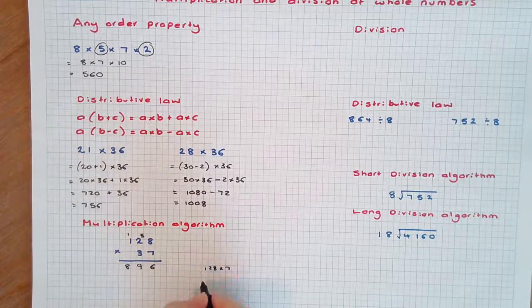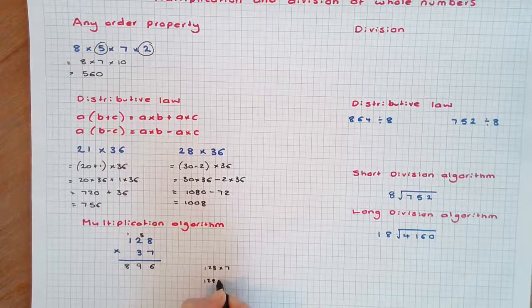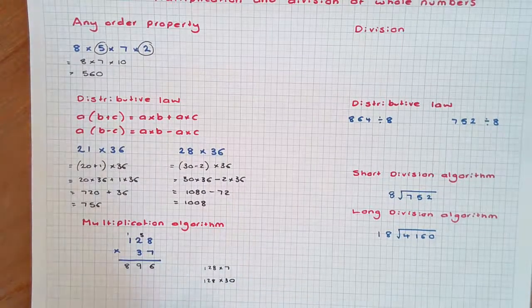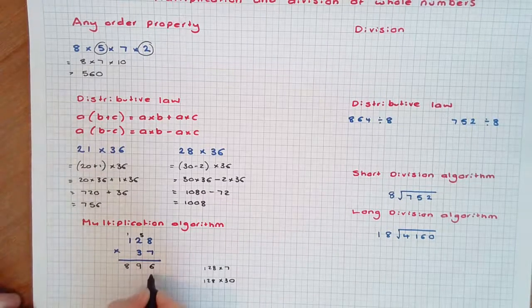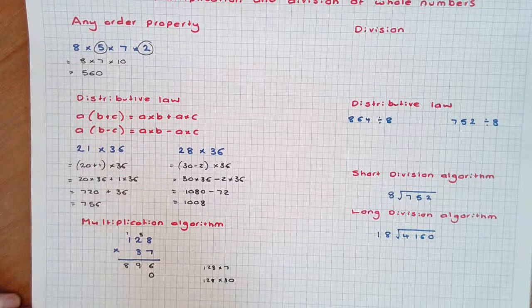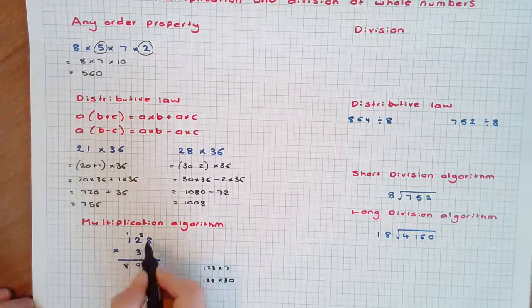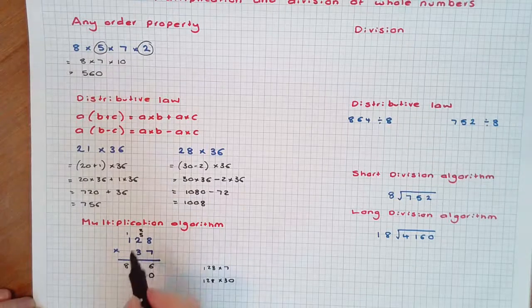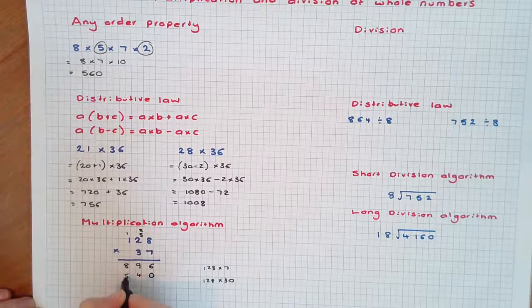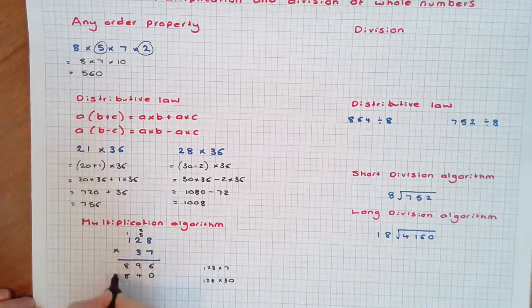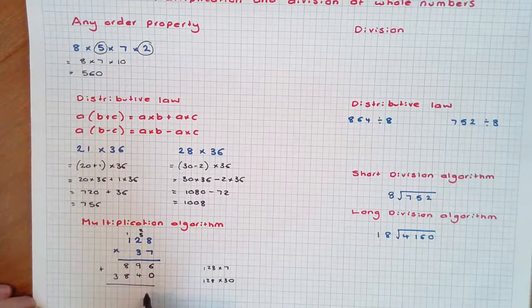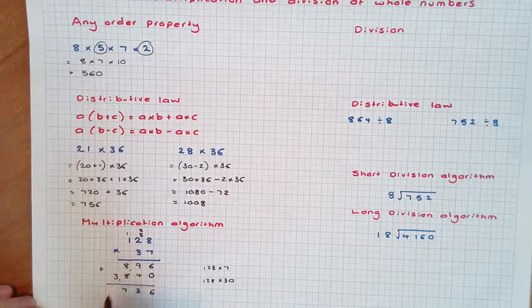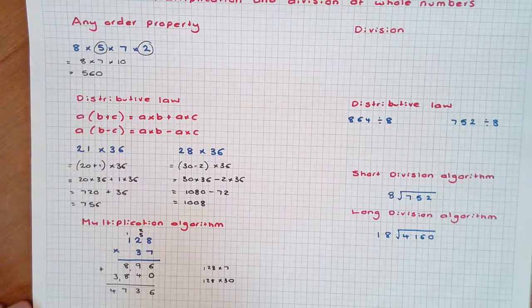The second line of working will effectively be 128 × 30. Instead of thinking about this as multiplying by 30, I'm going to place a 0 and now just multiply by 3. 3 × 8 is 24, carry the 2. 2 × 3 is 6 plus 2, which is 8. 1 × 3 is 3. Adding those two numbers together, we get 4736.